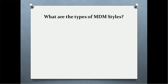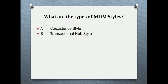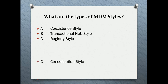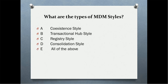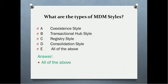Next question: what are the types of MDM styles? The options are co-existence style, transactional hub style, registry style, consolidation style, or all of the above. The correct answer is all of the above — all of these are valid MDM implementation styles.